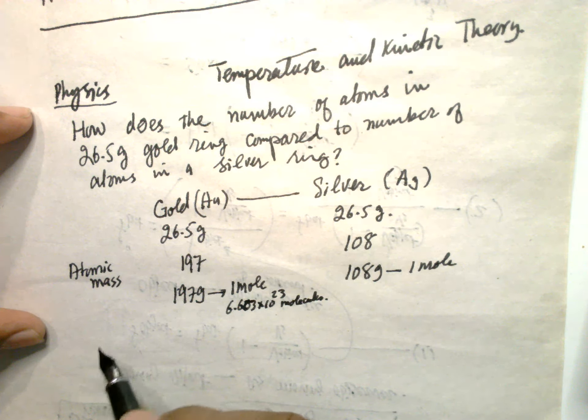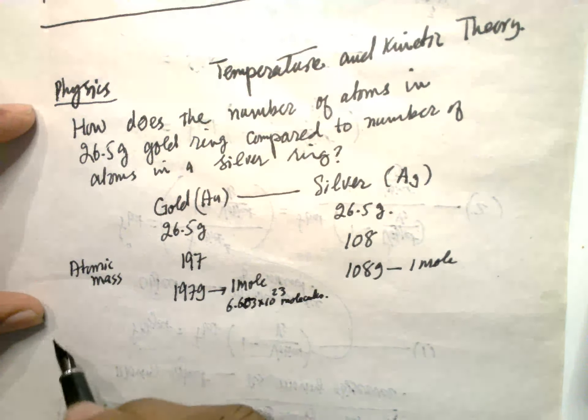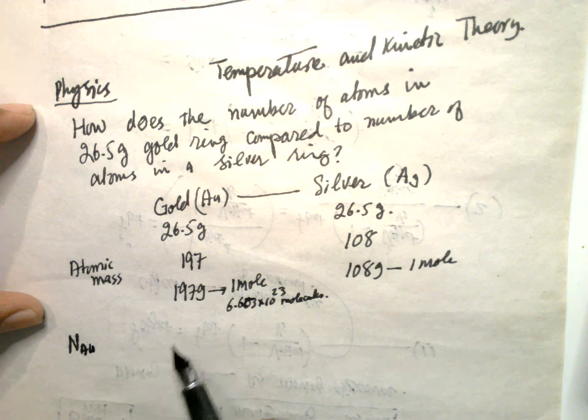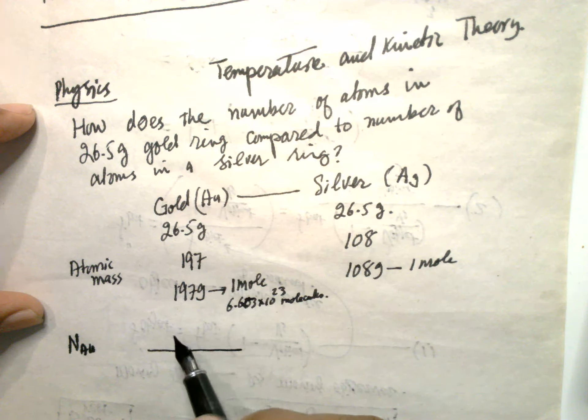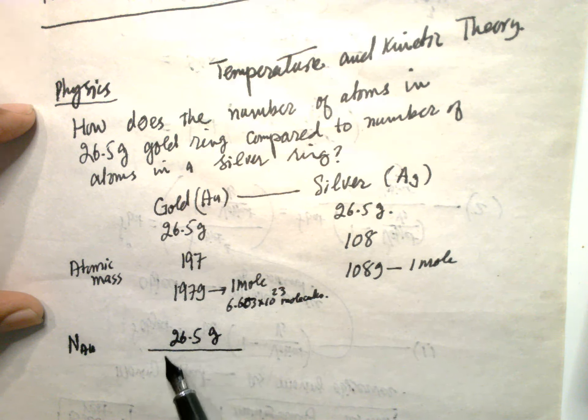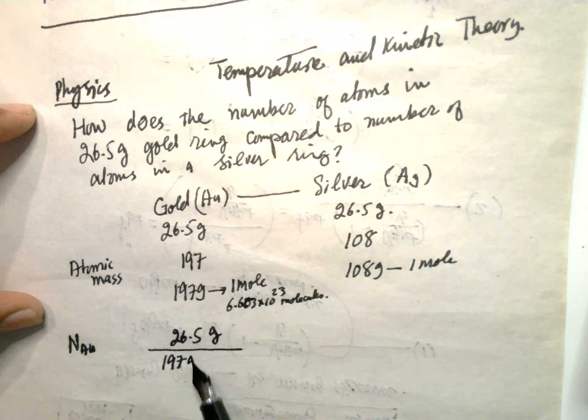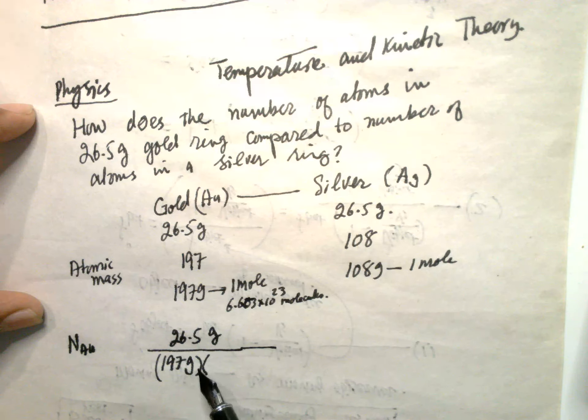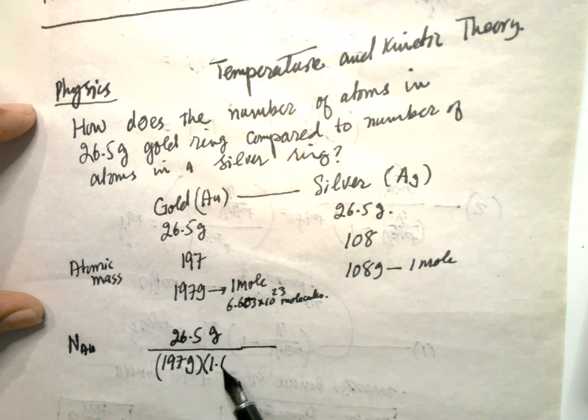So we want to compare. Number of atoms of Au. That will be 26.5 grams divided by 197 grams, multiplied by Avogadro's number.